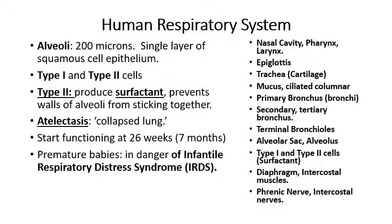If you exhale and some alveoli walls get stuck together and you have trouble getting them back apart, that is technically called atelectasis — the common term for that is a collapsed lung. That means too much air goes out of the lung, a lot of the alveoli collapse and get stuck together, and you have trouble re-inflating the lung.